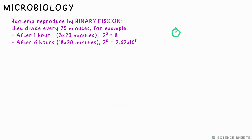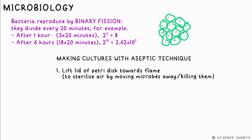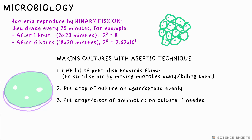Bacteria multiply by binary fission. We can do a practical on this by producing a culture on agar in a petri dish using aseptic technique — that is, making sure nothing else contaminates the culture. We lift the lid of the dish towards a flame, which causes other microbes in the air to move upwards and away from the dish, and it destroys them too. Using sterilised equipment, we can either put a drop of bacteria culture in the middle, or spread it all around to create a lawn, and put spots of different antibiotics on top.